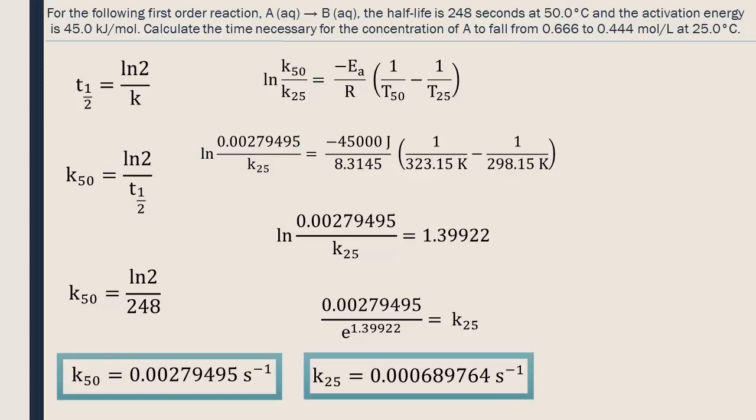Finally, we can calculate the time it takes for the concentration to fall from 0.666 to 0.444 moles per liter at 25 degrees Celsius. We will use the following equation, which was mentioned earlier. Let's isolate the variable t.